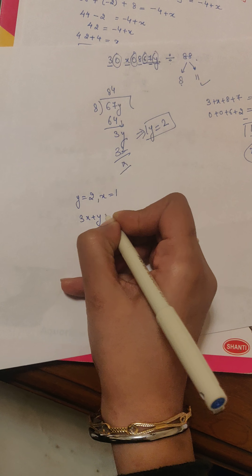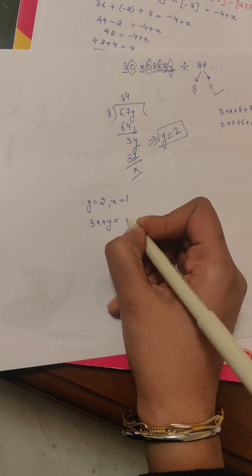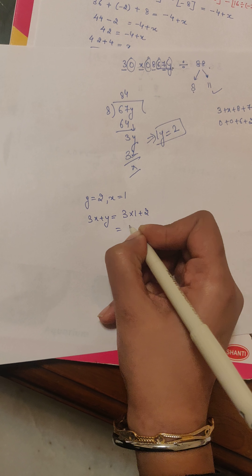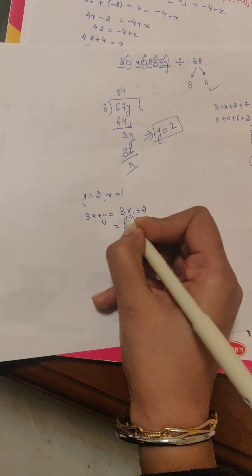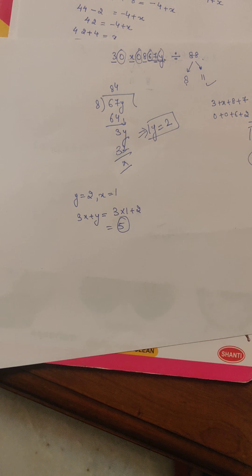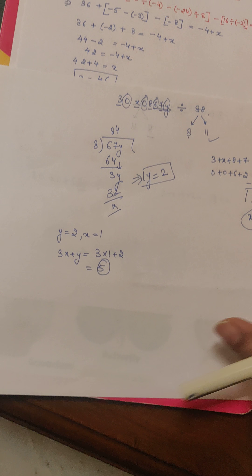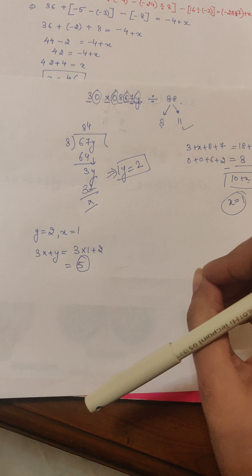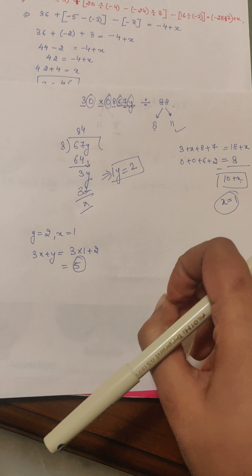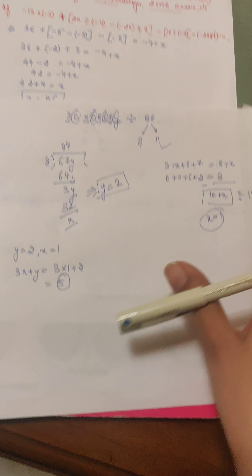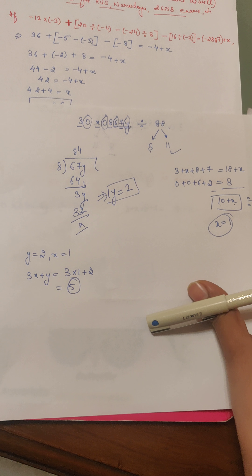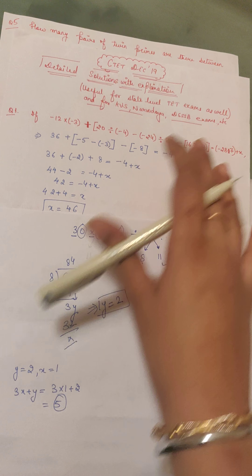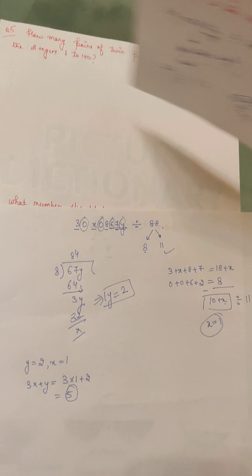So X equals 1 and Y equals 2. Substituting into 3X plus Y: 3 into 1 plus 2 equals 5. So 5 is the correct answer. In these types of questions, apply divisibility rules and first break the number into its factors. Let's see the next question — I have many more for you.